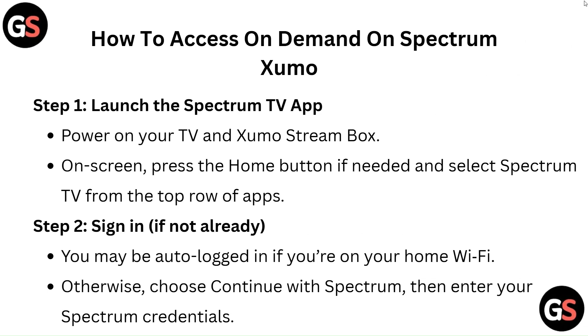How to access On Demand on Spectrum Zumo. Step 1: Launch the Spectrum TV app. Power on your TV and Zumo stream box. On screen, press the home button if needed and select Spectrum TV from the top row of apps.